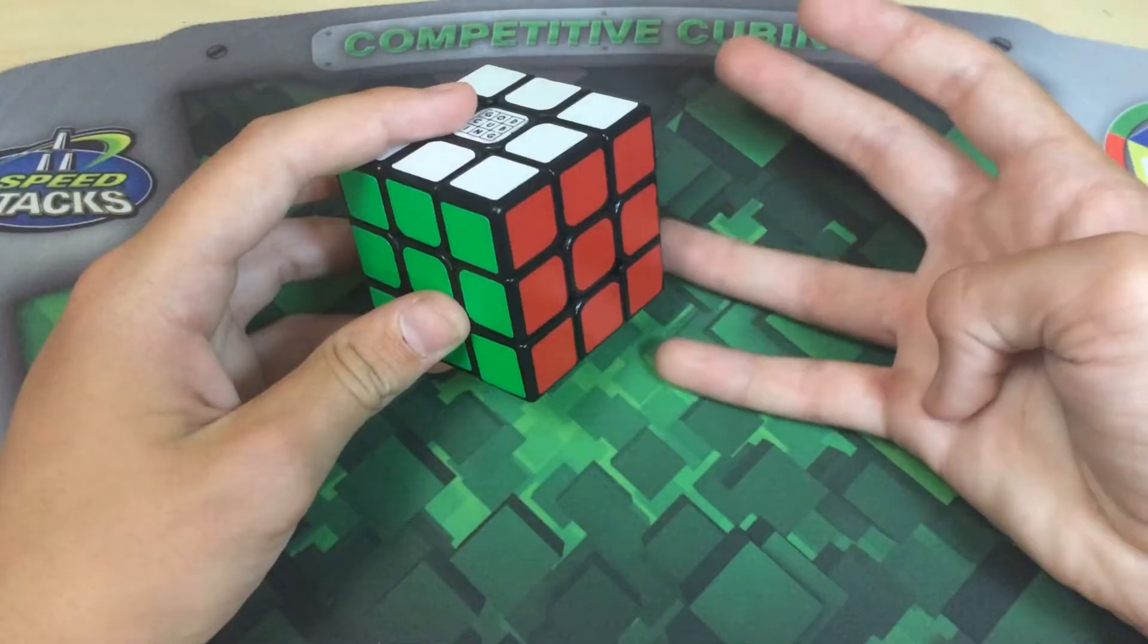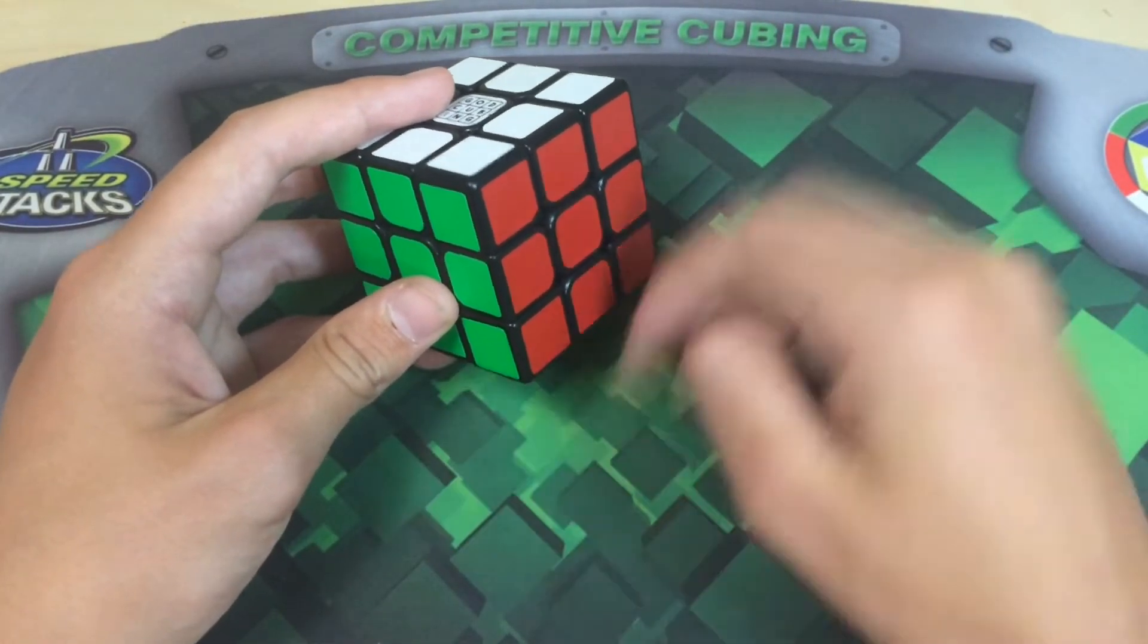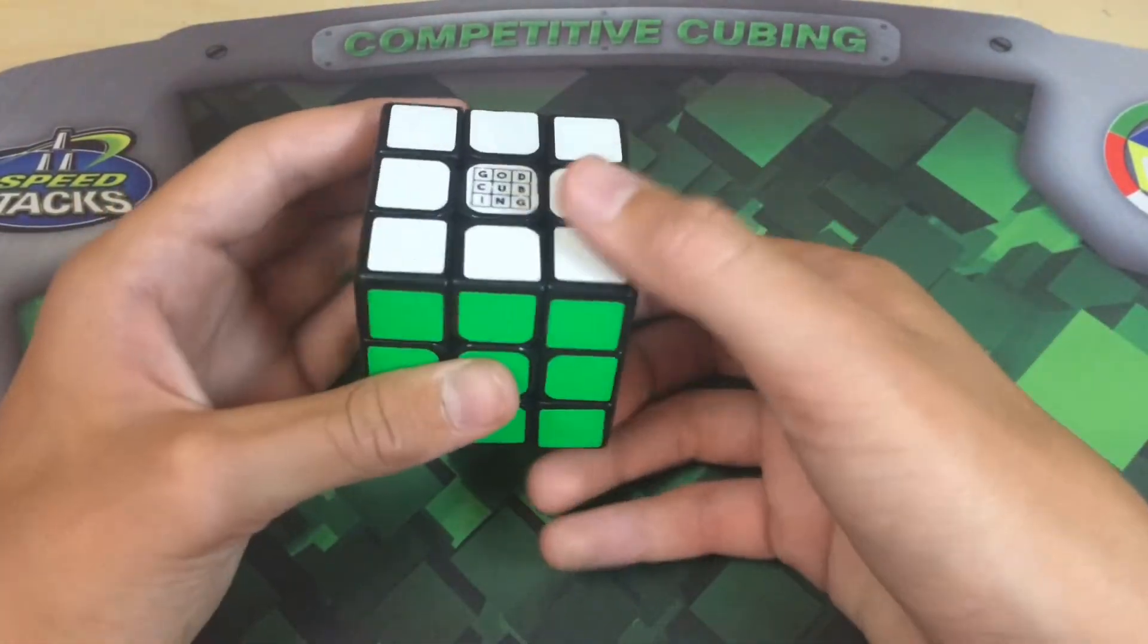First, we start with the fourth step, because that is the one that would come first, because we inversed it. So we do only double moves.